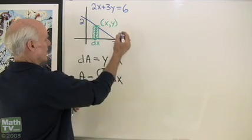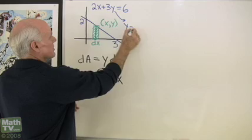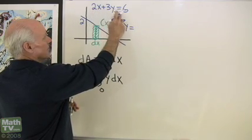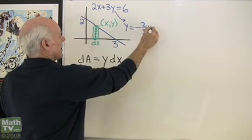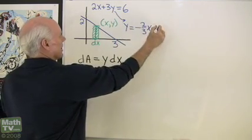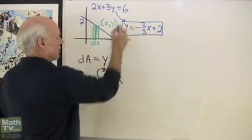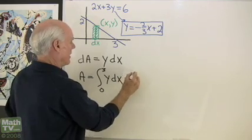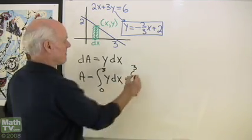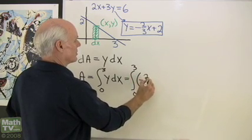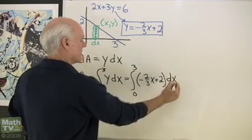I want y in the integral, so I'm going to solve the equation for y. So y is equal to negative 2 thirds x plus 2. So I'll substitute that in, and I have the integral from 0 to 3 of negative 2 thirds x plus 2 dx.